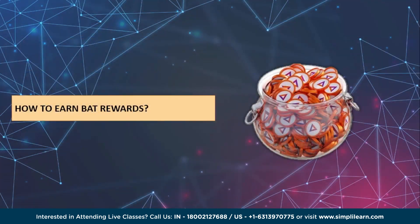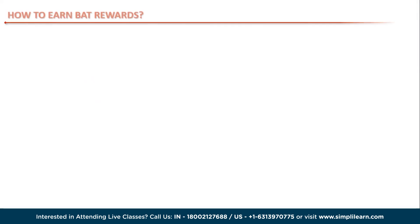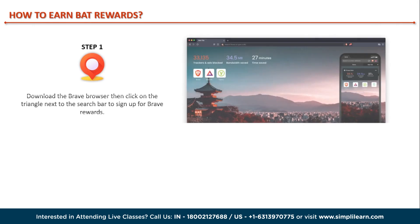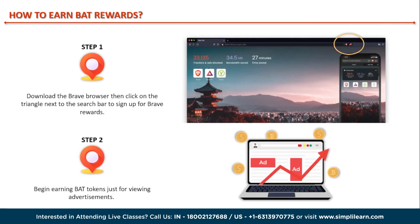How exactly do you earn BAT rewards? The first step is to download the Brave browser. You can then sign up for Brave rewards by clicking on the triangle next to the search bar. You can now start earning BAT tokens simply by viewing advertisements. Advertisements appear as background images, push notifications, or cards in your news feed, which is the second step. They are not included in videos or pop-ups, making the experience seamless and unobtrusive.